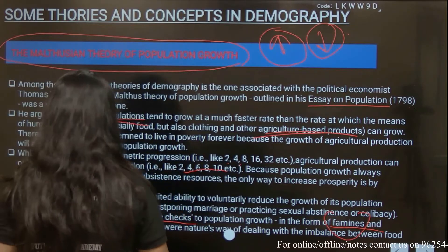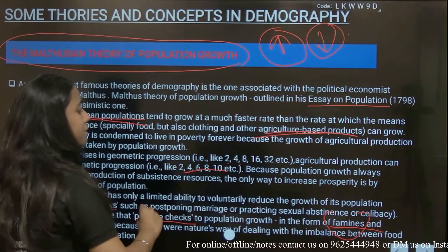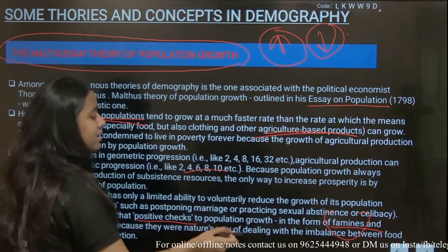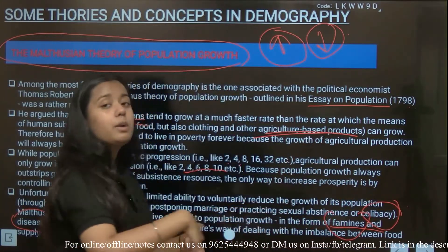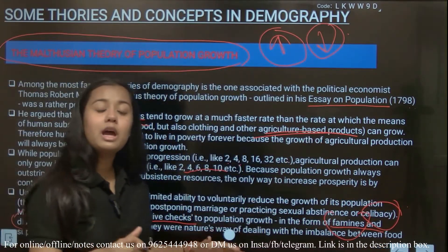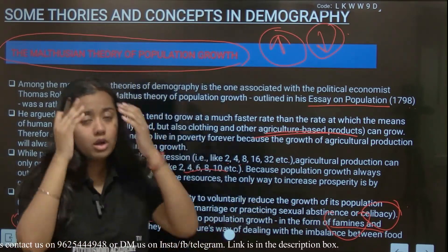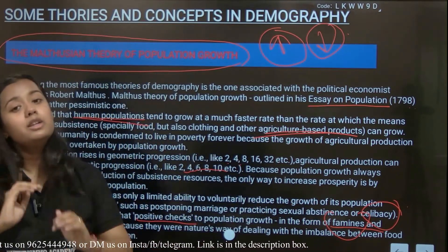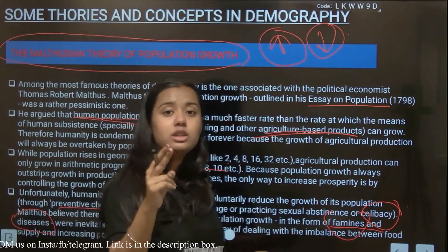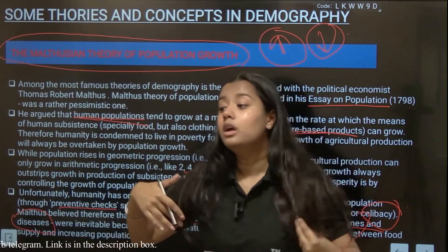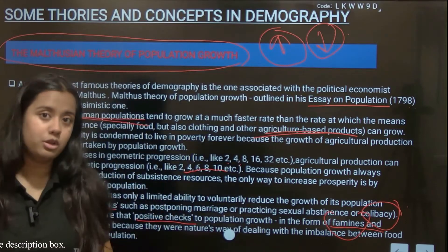Second, he gave us preventive checks, which include postponing marriages and practicing sexual celibacy — meaning you don't have a population increase, you don't have new generations born. Don't get married, don't have babies born. These two things — positive checks and preventive checks — are the solutions he provided.